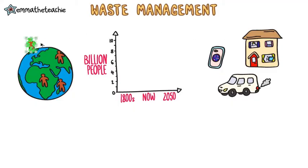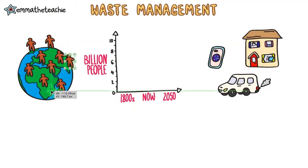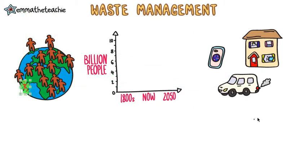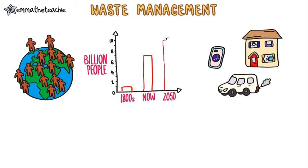Humans have lived on this planet for thousands of years but in relatively small numbers. In the early 1800s our population passed the 1 billion mark for the first time. In the last 200 years it has skyrocketed to over 7 billion people, and the United Nations predicts there will be nearly 10 billion people by 2050.